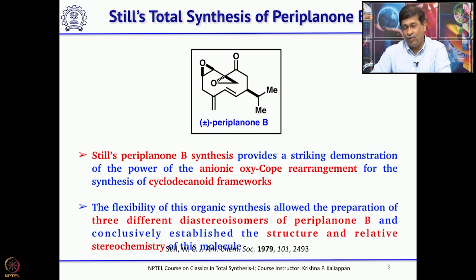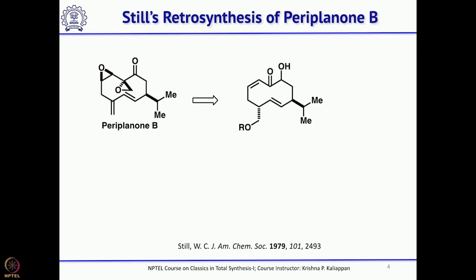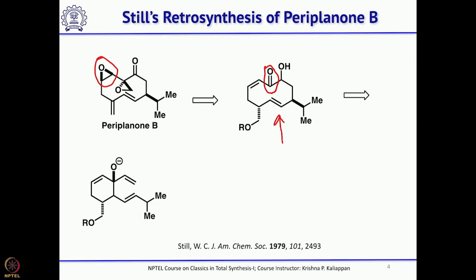This ten-membered ring was cleverly formed using the anionic oxy-Cope rearrangement. According to Still, the two epoxides in the molecule can be made by two different methods. One epoxide can be made directly from the double bond using MCPBA or a nucleophilic epoxidizing agent, while the other epoxide can be made from the carbonyl group using sulfonium ylide or sulfoxonium ylide. That is how he planned the synthesis, and the cyclodecanone could be made using anionic oxy-Cope rearrangement.